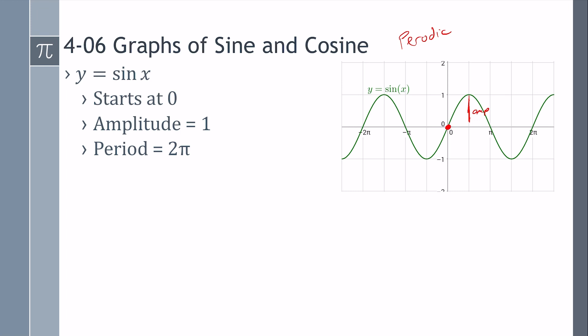And the period, the period is one full cycle, which is one up and one down. Is two pi, which is a full circle.